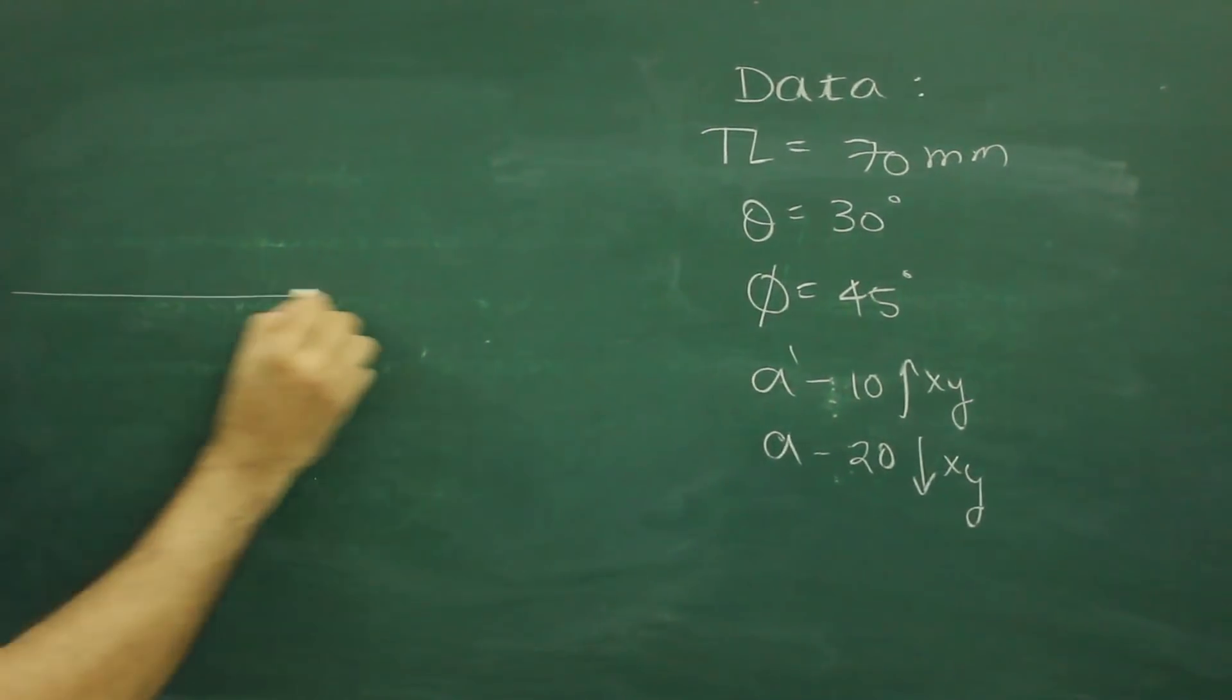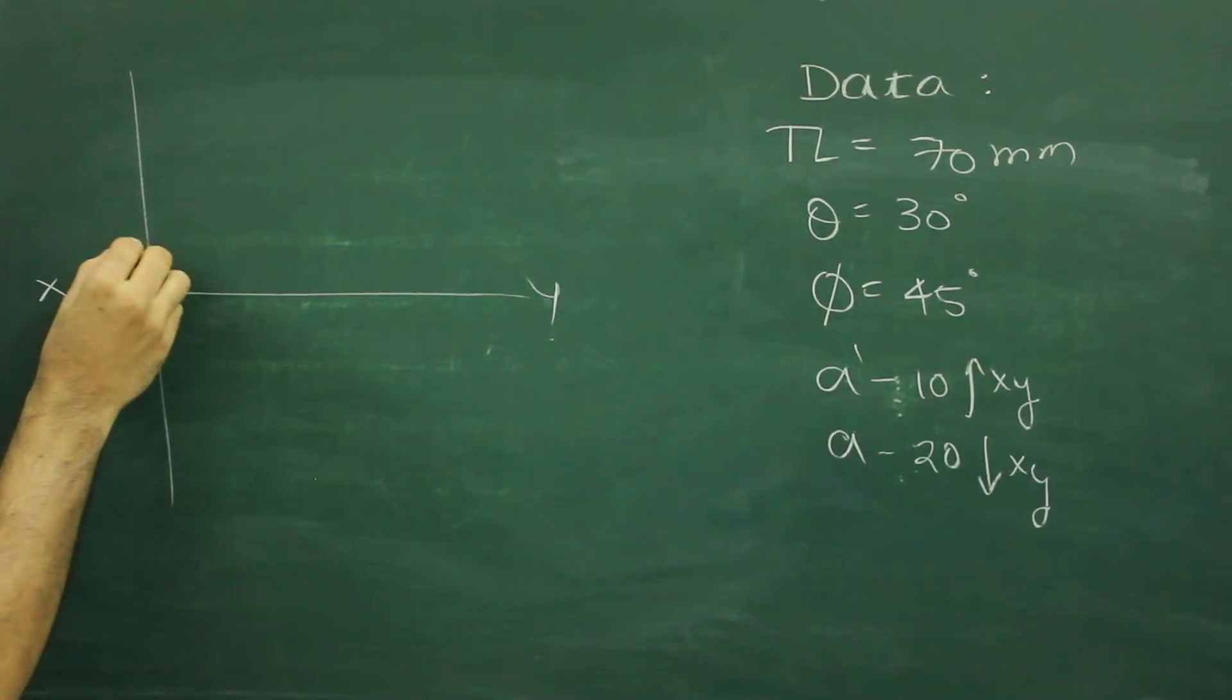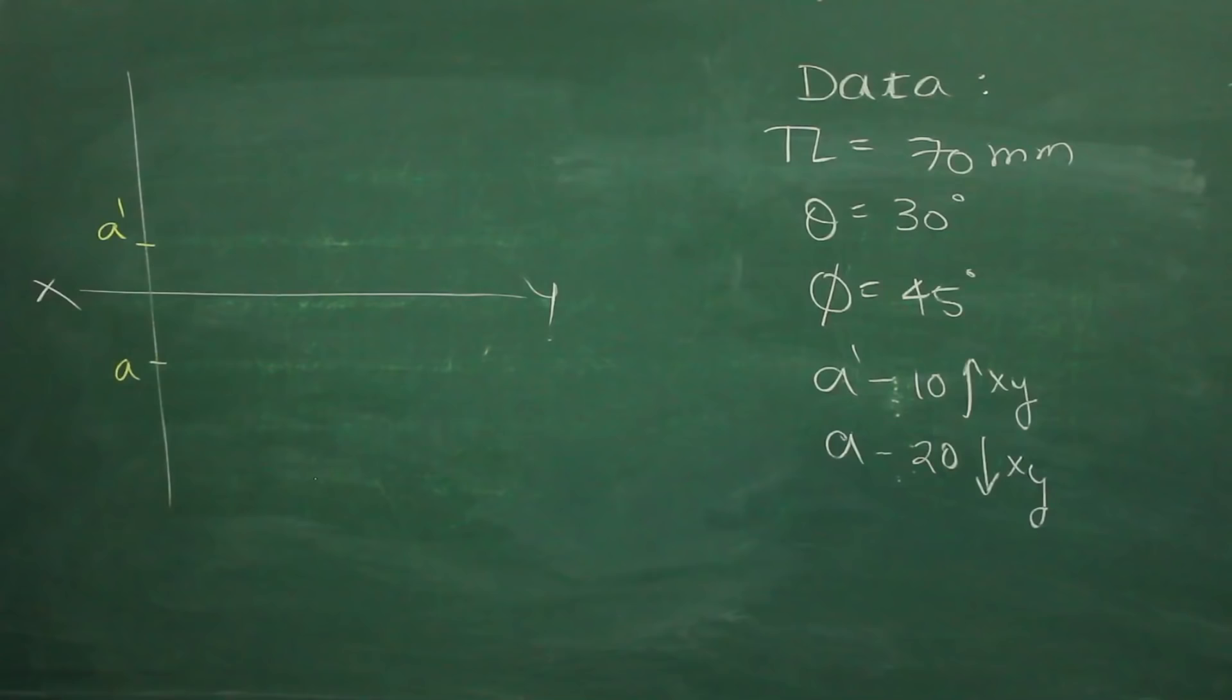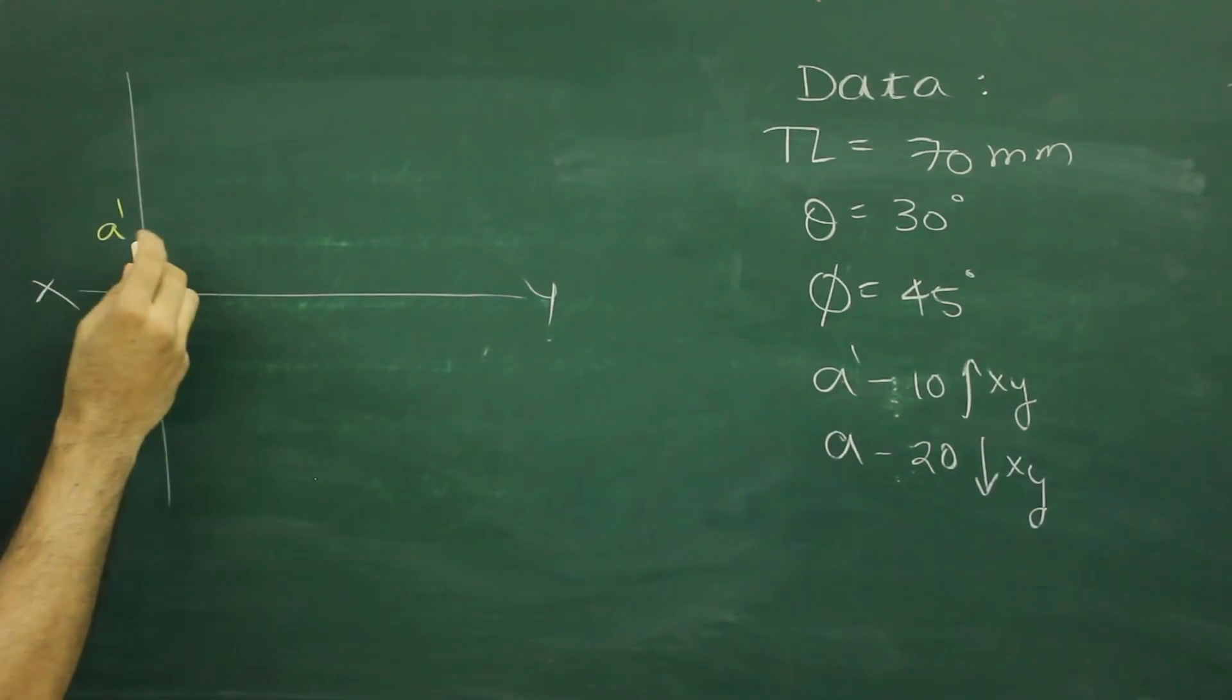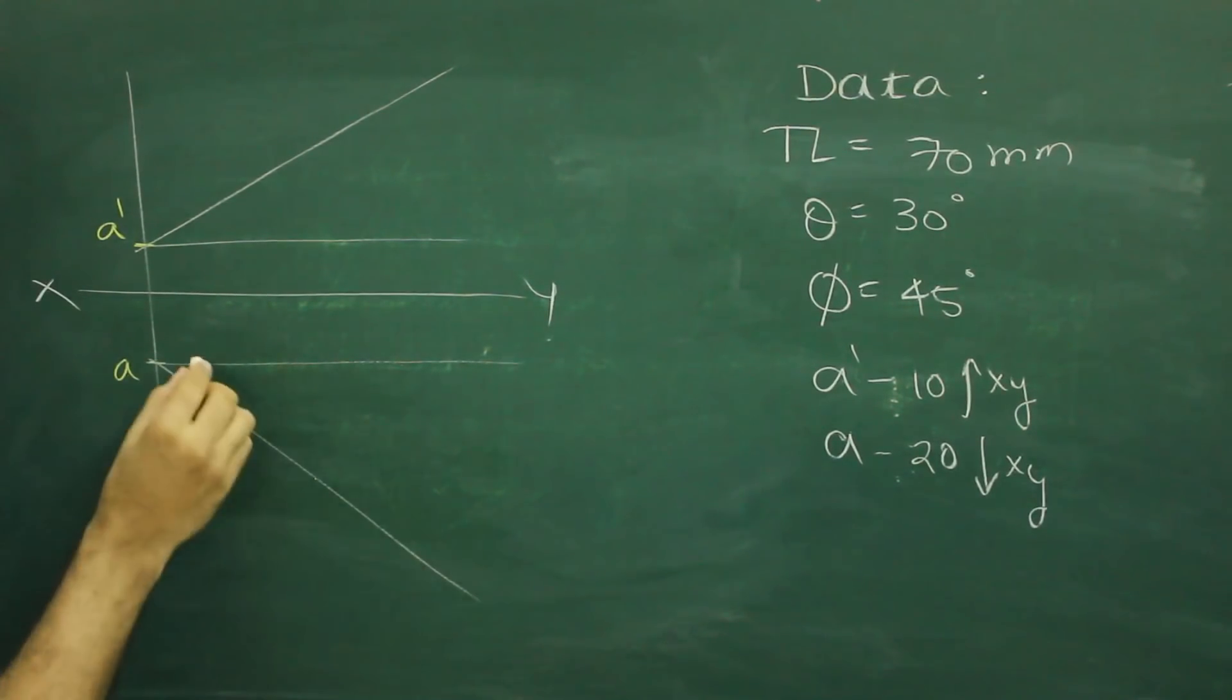First we will draw x y, then we will mark point a, that is a dash and a. Then we have angle theta and phi, so we will mark angle theta as well as phi.